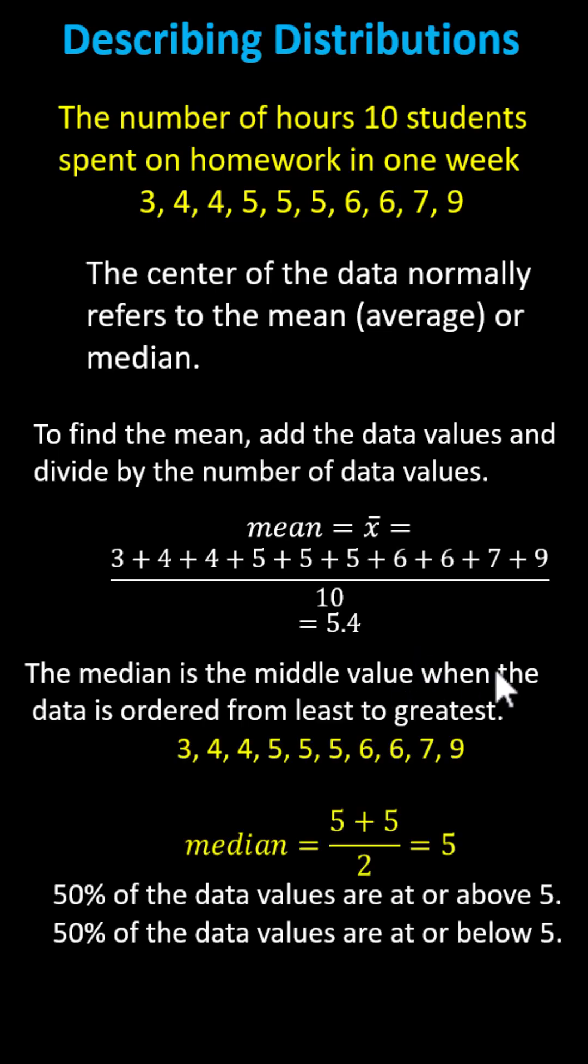The median is the data value in the middle when the data is ordered from least to greatest. In this case though, because there are 10 data values, there are two middle values. When this occurs, to find the median, we find the mean of these two middle values. The median is equal to 5.